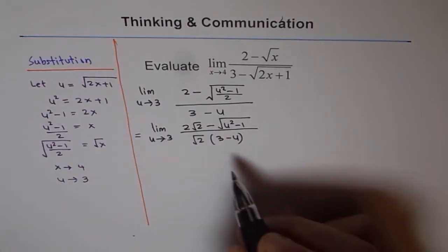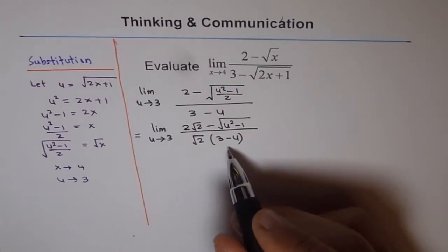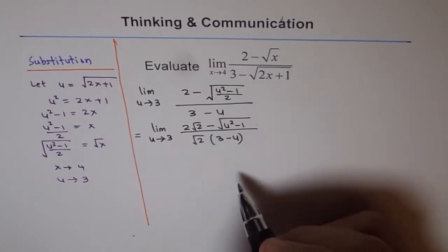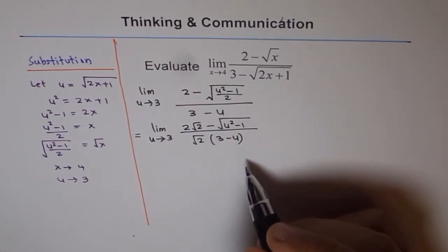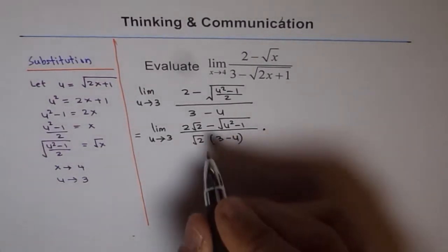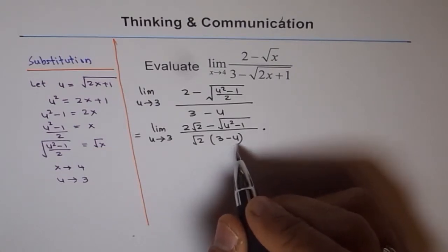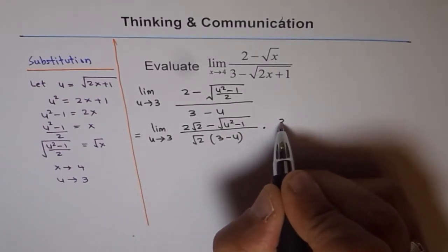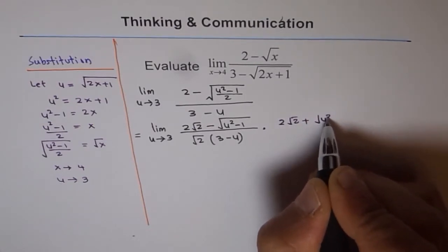How do we simplify further? We can see that 3 minus u could be factored out. We can rationalize the numerator now — at least we have only one rationalization to do. We will rationalize by multiplying by (2 square root 2 plus square root of u squared minus 1).